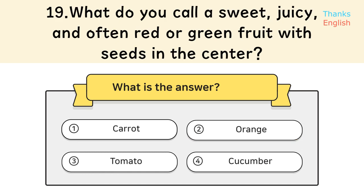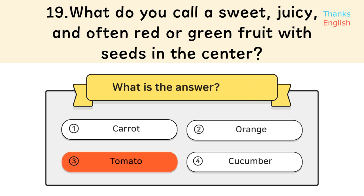Question 19: What do you call a sweet, juicy, and often red or green fruit with seeds in the center? Answer 5: Tomato.